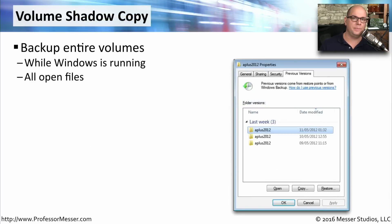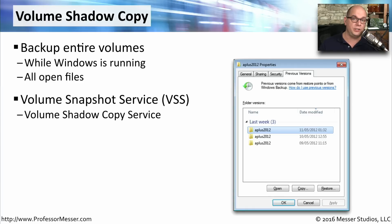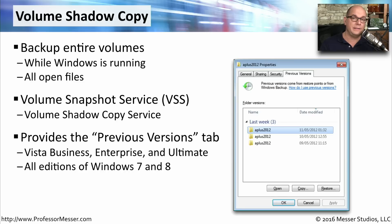One challenge with performing backups is that traditionally you've needed access to the entire file to back it up. If a file was in use or opened by an application, you could not back it up. Since modern applications may leave files open constantly, Microsoft created a feature called Volume Shadow Copy. This allows Windows to back up entire volumes even if the operating system is running, regardless of what files may be in use. This is enabled by the Volume Snapshot Service, or VSS, which you'll find always running by default in your Windows services. This feature also allows you to go back to previous versions of a document.